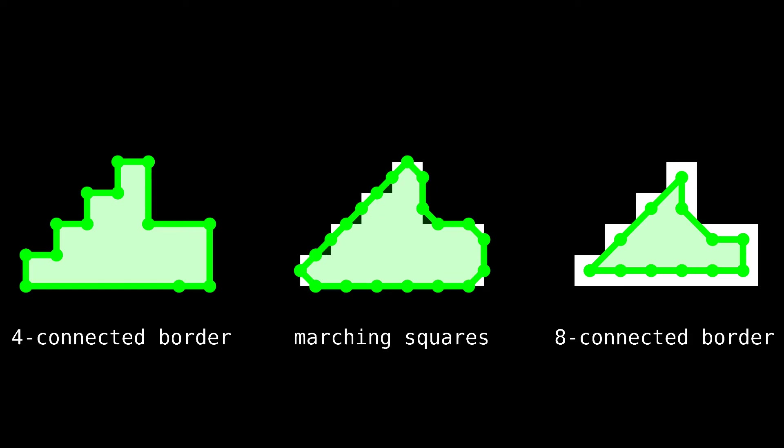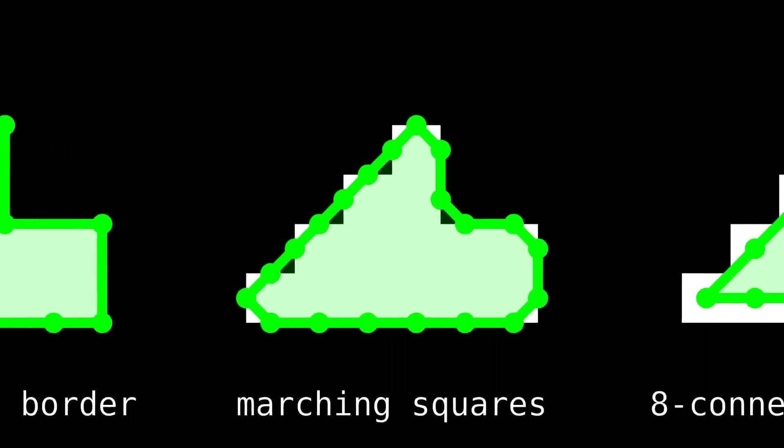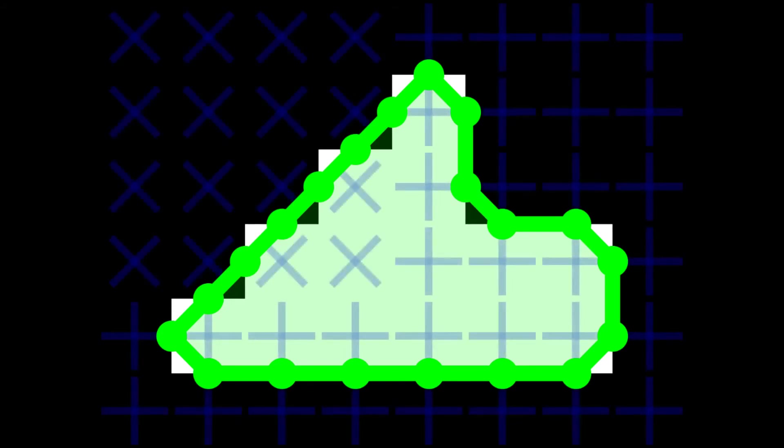However, that also means none of them can distinguish between slanted walls and corners since they look identical locally. The polygonization step would need information about the local direction of the contour in order to decide between a slanted wall and a corner. This missing information is precisely what our frame field output brings.